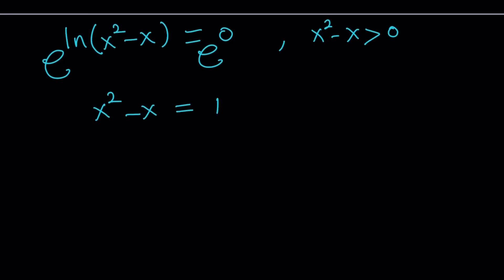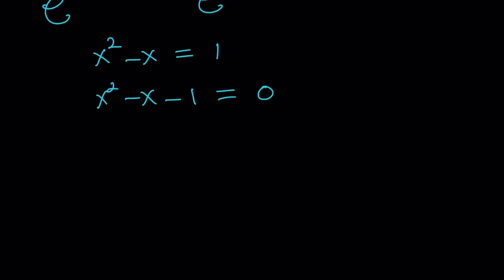And this gives us beautiful solutions. Let's go ahead and solve it by using the quadratic formula. Let's put everything on the same side. The quadratic formula gives us negative b plus minus the square root of b squared, which is 1 plus 4, divided by 2. And that is equal to negative 1 plus minus square root of 5 over 2.